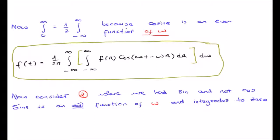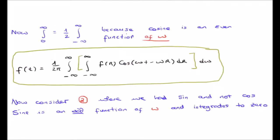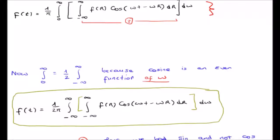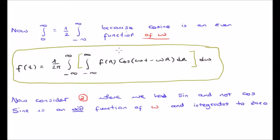The next thing to do is a bit of a sleight of hand. Let's consider this particular integral where we had a sine rather than a cosine. Sine is an odd function of omega, and therefore it would integrate to zero over the symmetric infinite interval. So we can note: because cosine is an even function of omega we replaced the zero-to-infinity integral by half of the infinite integral, and because sine is an odd function of omega it would integrate to zero.